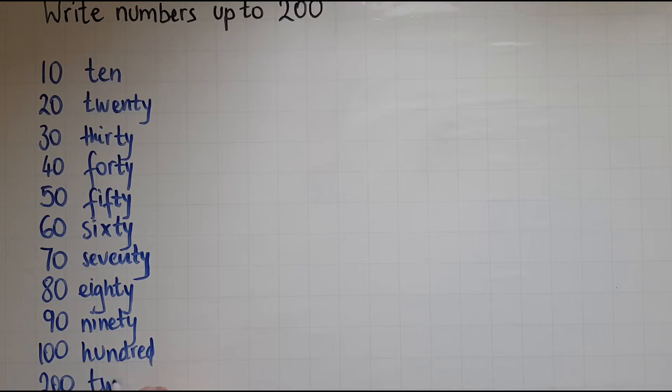100. Two hundreds. So two lots of 100, which makes two hundreds.